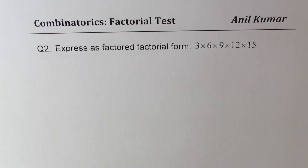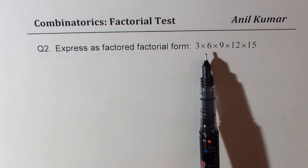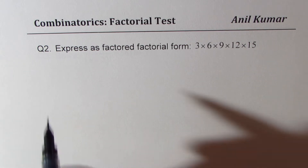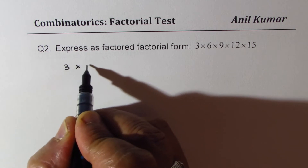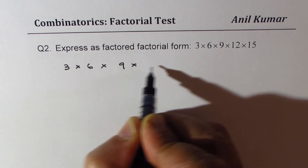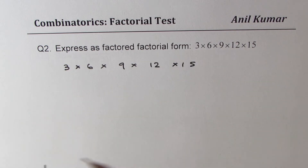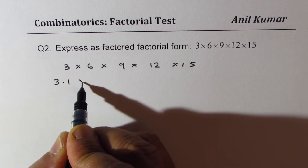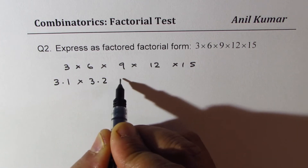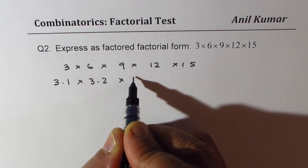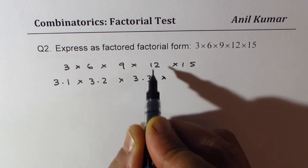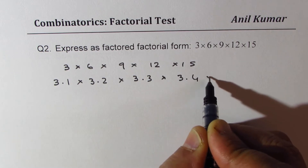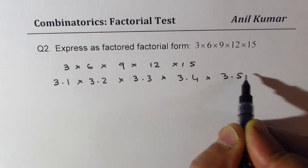Let's move on to question number two: express in factored factorial form 3 times 6 times 9 times 12 times 15. This is a tricky question. We have to multiply 3, 6, 9, 12, and 15. You could think like this: 3 is 3 times 1, 6 is 3 times 2, 9 is 3 times 3, 12 is 3 times 4, and 15 is 3 times 5.